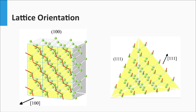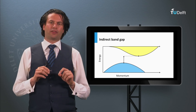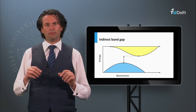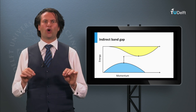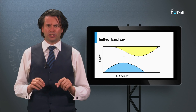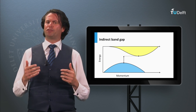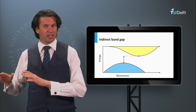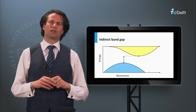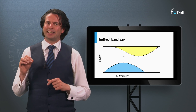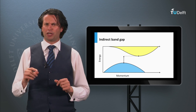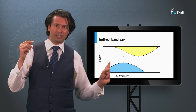Why are these directions important? As discussed in week 3, we have direct and indirect band gap materials. This can be expressed in the so-called electronic band dispersion diagram. On the vertical axis you have the energy position of the valence and conduction band, and on the horizontal axis the crystal momentum, or in other words the momentum of the charge carriers. To be excited into the conduction band, charge carriers in an indirect band gap material require a change in both energy and momentum.